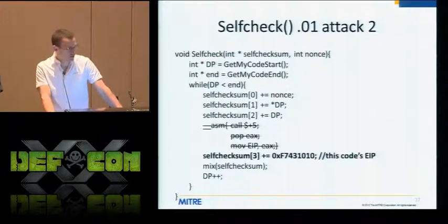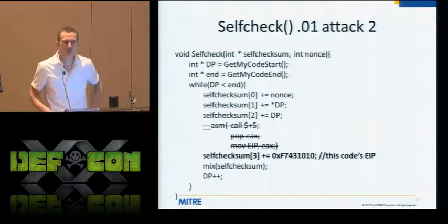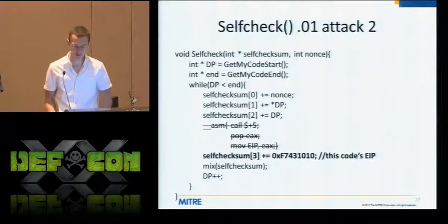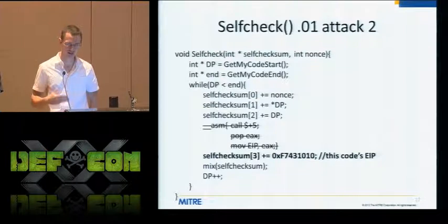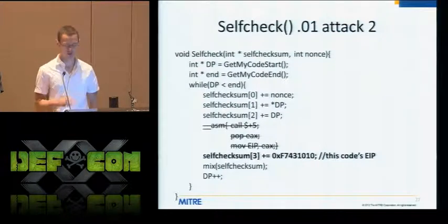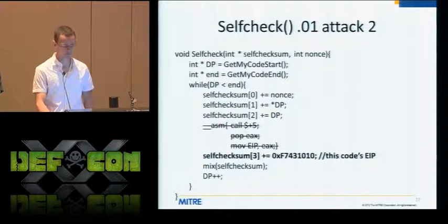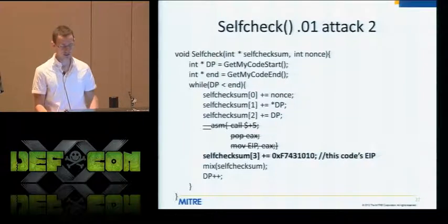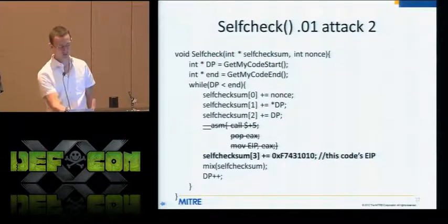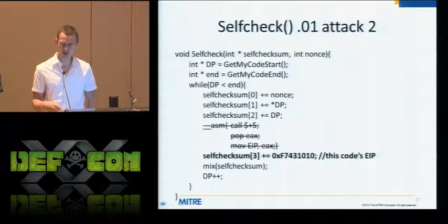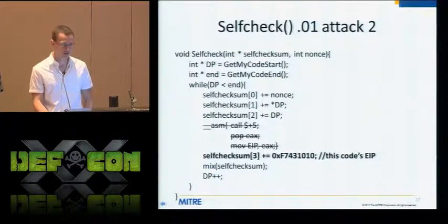Another problem we noticed: when incorporating the instruction pointer, it's the same at every iteration of the self-checksum. Instead of doing the goofy trick of calling ahead then popping off the stack to get your current EIP in x86, the attacker could just hard-code that instruction pointer. The attacker has gained a few x86 instructions he doesn't have to execute — he's made the whole checksum smaller. This would allow him to offset the cost of forging the data pointer, resulting in a net zero additional time in the checksum calculation.